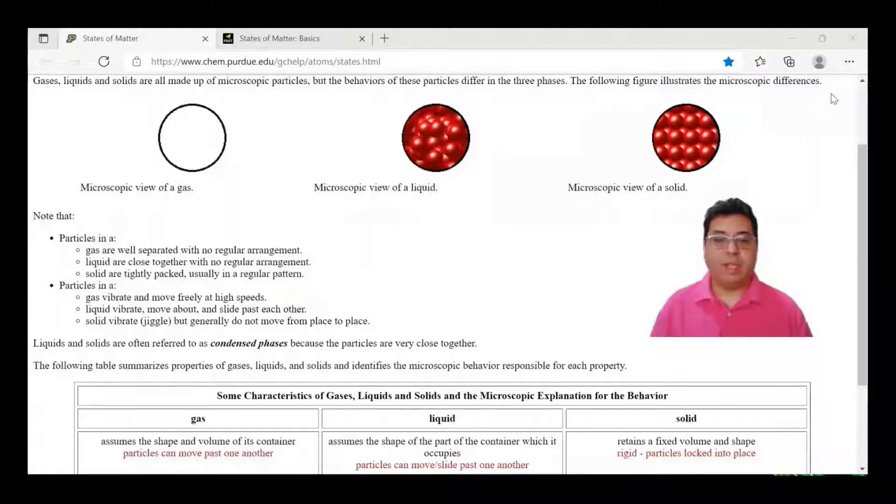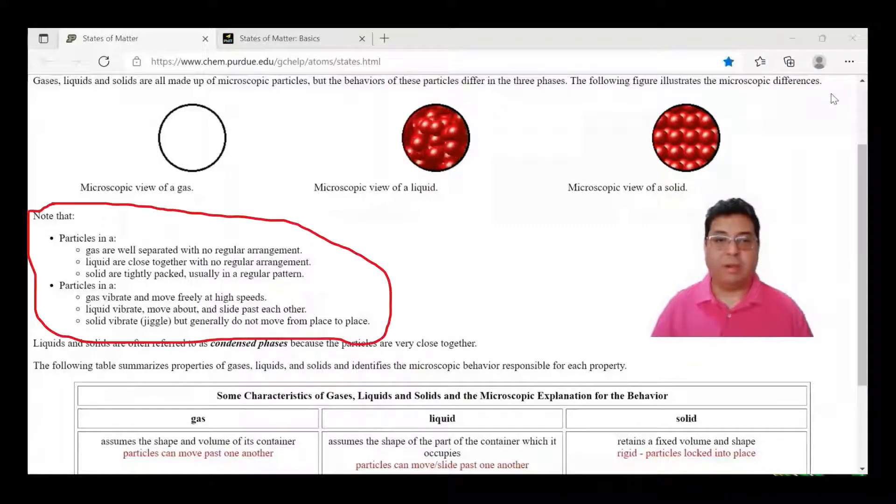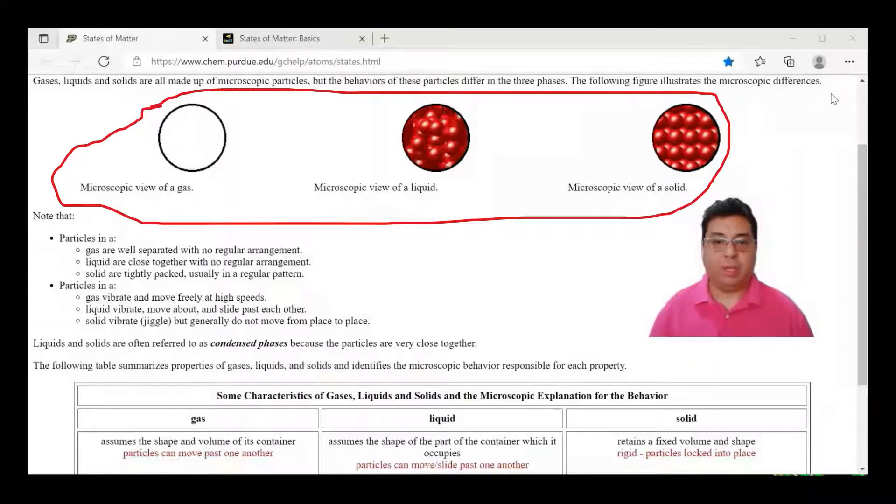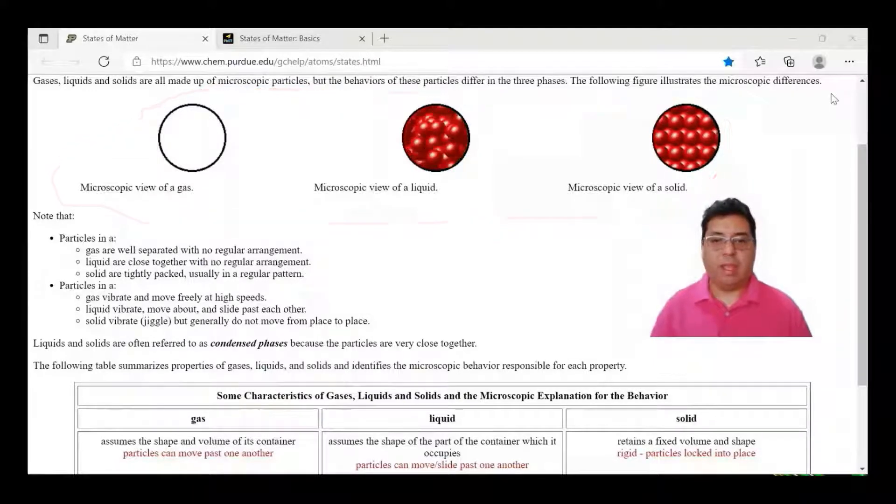This is a website out of the University of Purdue in the United States. As you can see here, it's got the descriptions of what the states of matter are showing a solid, liquid, and a gas here. It has these small little circular objects showing how the molecules move. I'm not sure if it's showing on your side or not. I apologize for the gas one not being displayed, but don't worry because the next website will clear that up and show you how gas is applied.